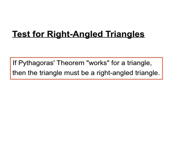So the test for right angled triangles: if Pythagoras' theorem works for that triangle, for those lengths and those numbers, then the triangle must be a right angled triangle.